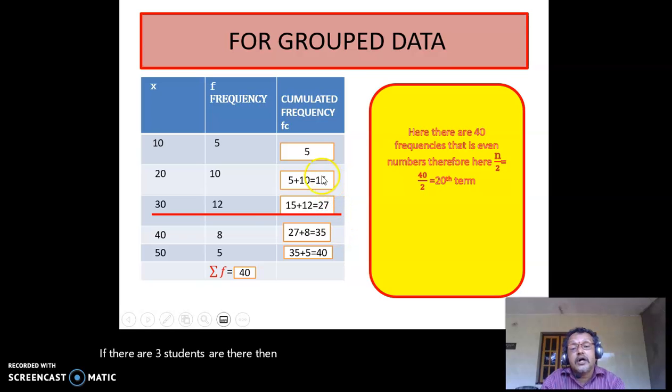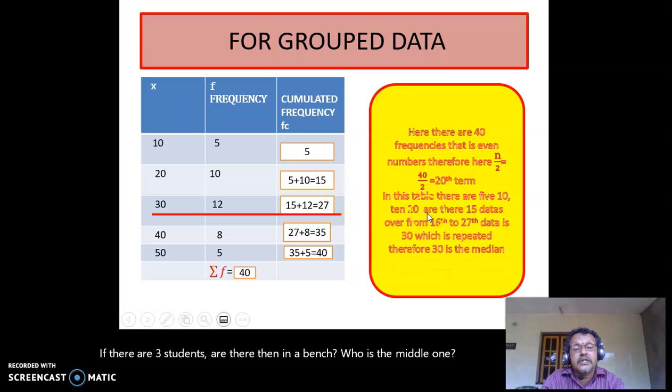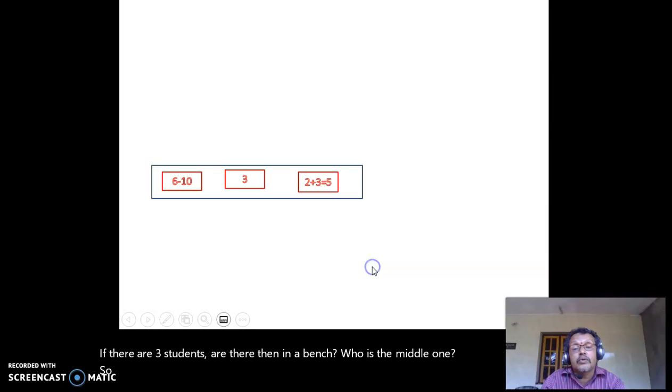See here: up to 5, the value 10 is repeated. From 6 to 15, 20 is repeated 10 times. From 16 to 27, 30 is repeated 12 times. Therefore the 20th term is 30, so 30 is the median of this score.